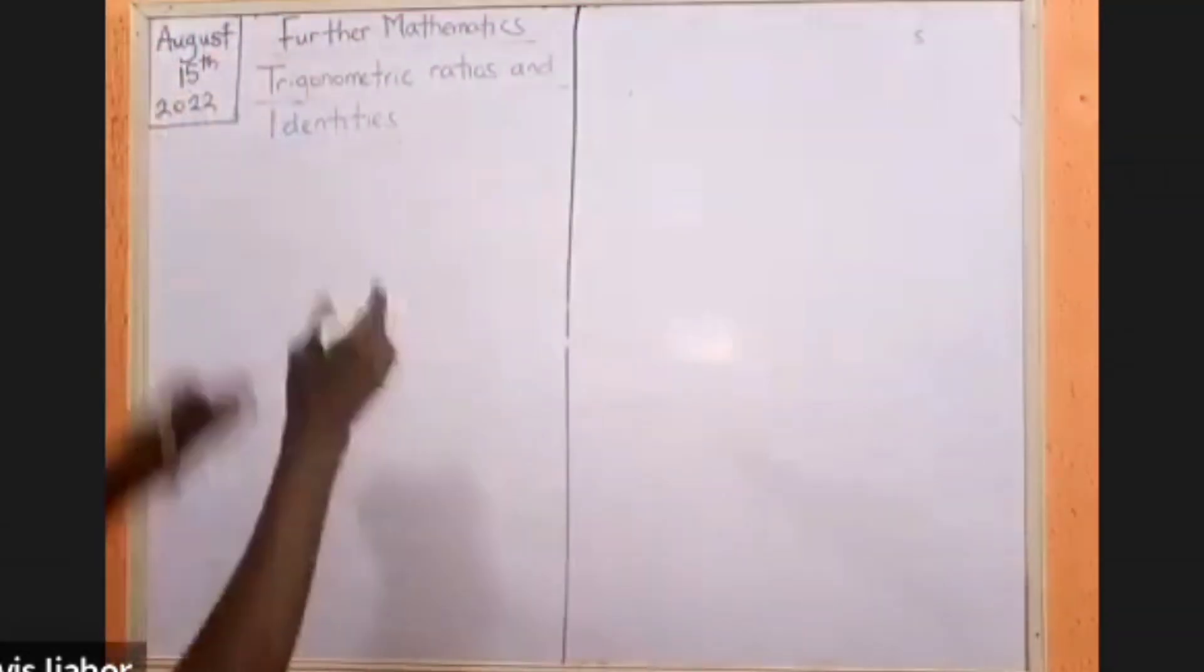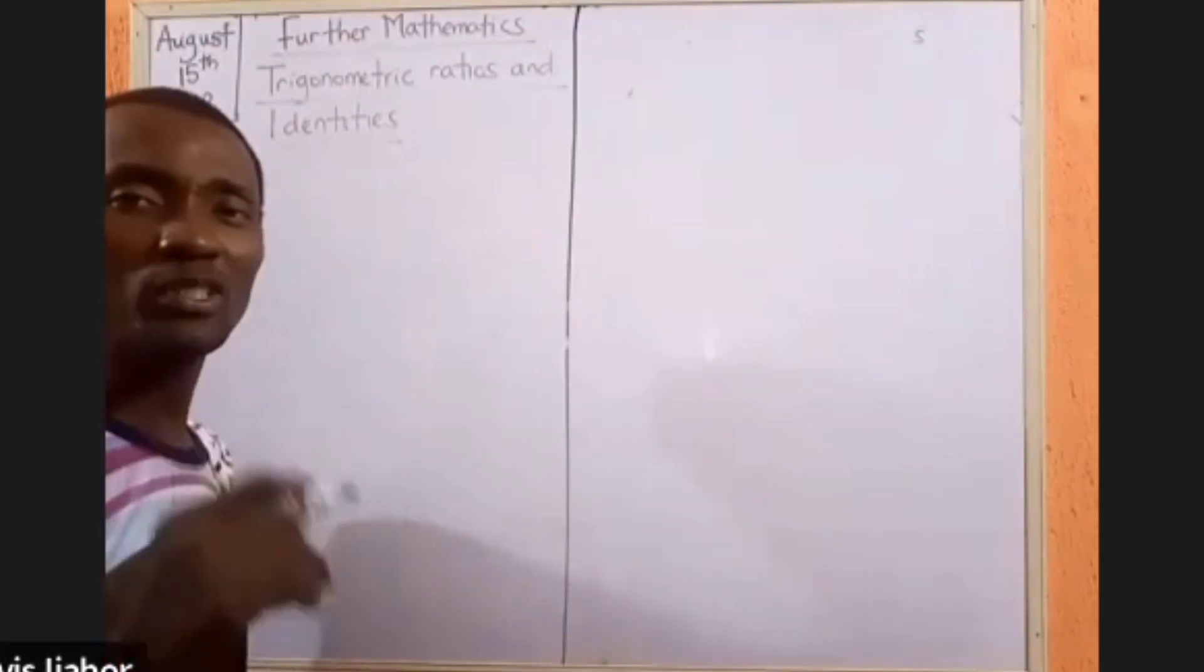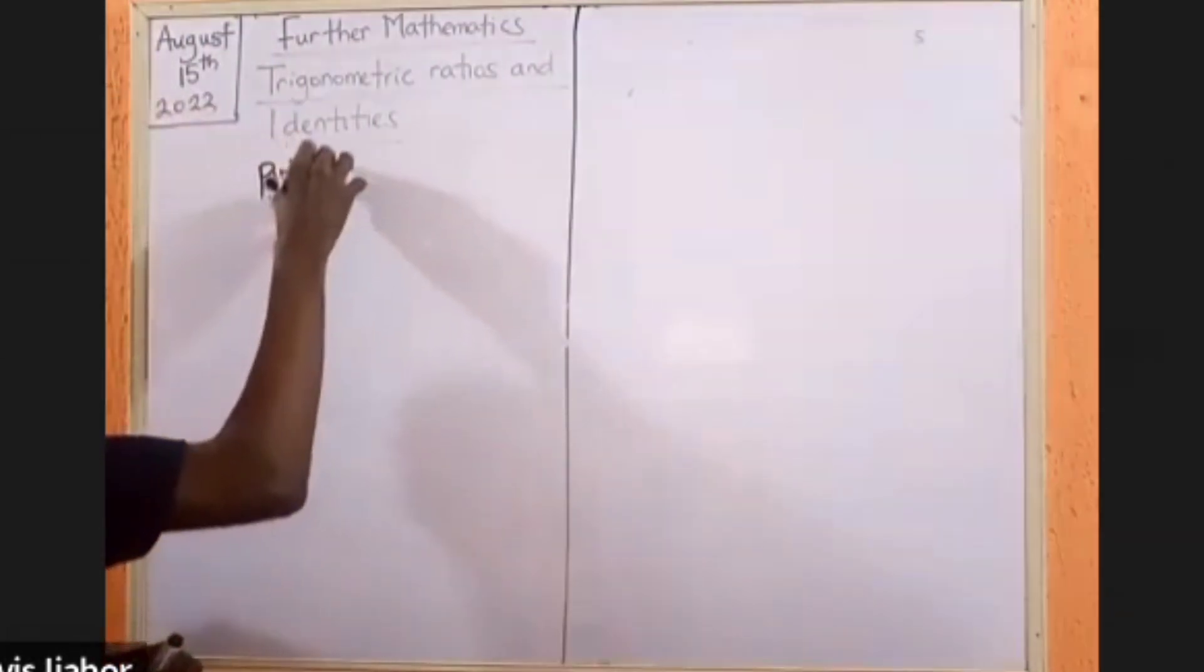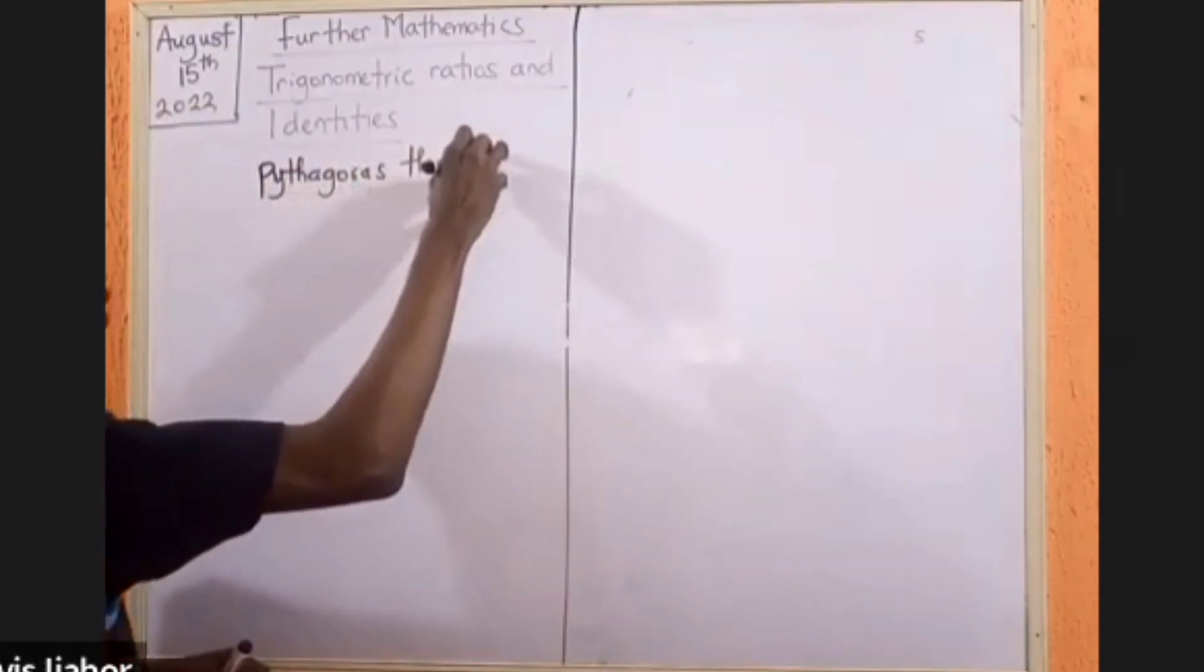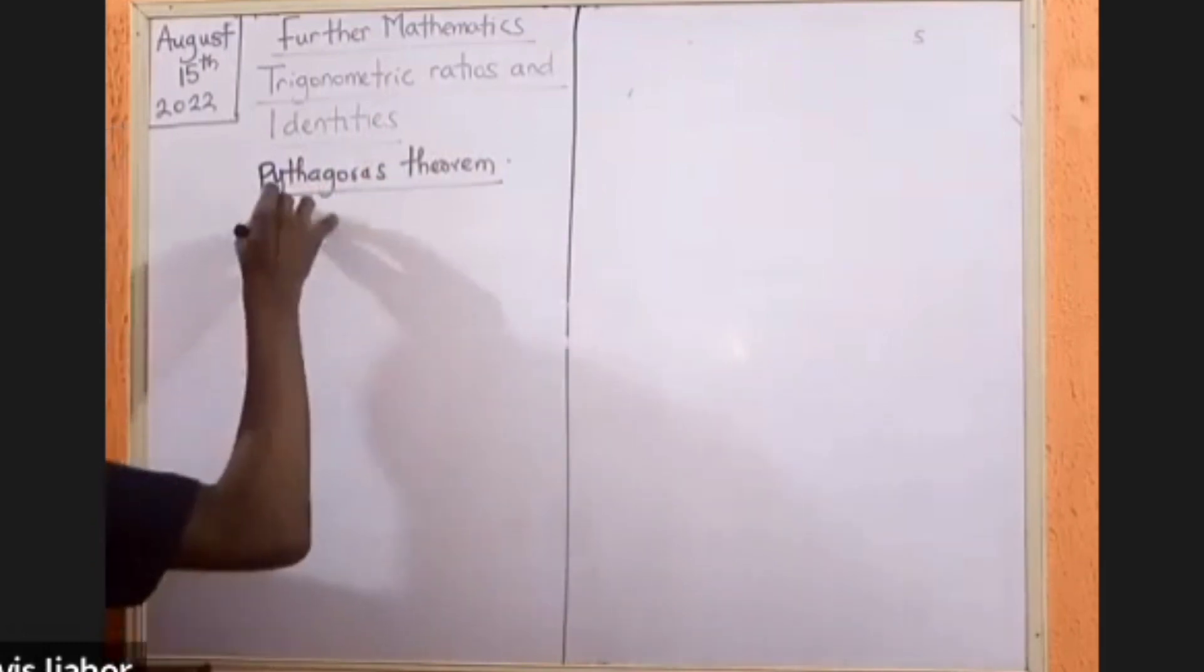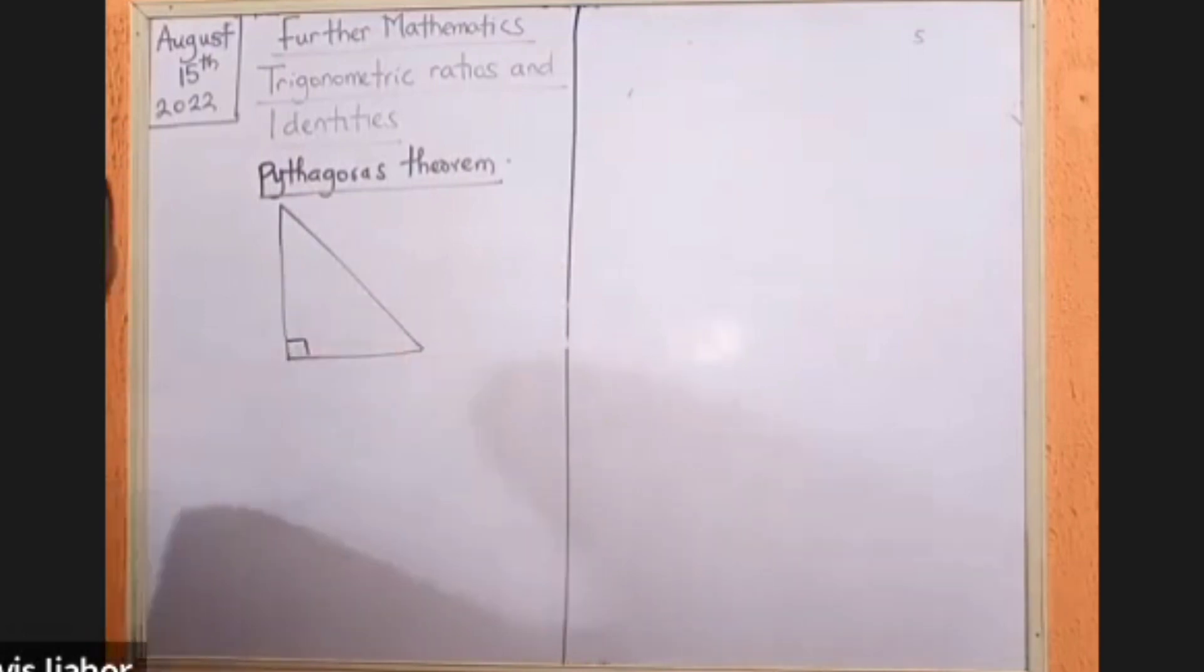Okay, so close to the discussion on our trigonometric ratios will be a very important idea which we call Pythagoras' theorem. Pythagoras' theorem is also narrated on the premise of what a right angle triangle is. It says that...